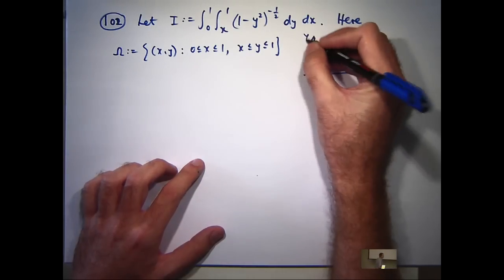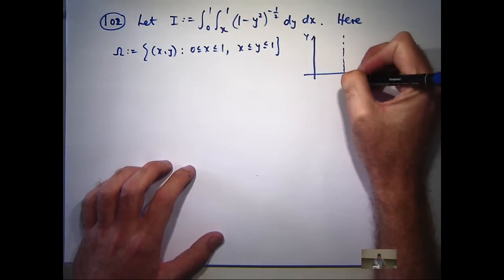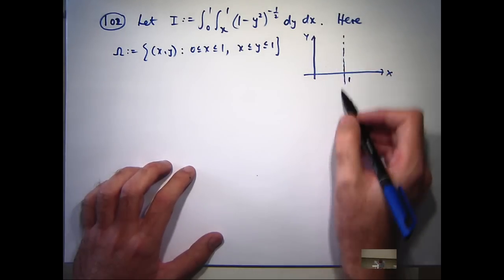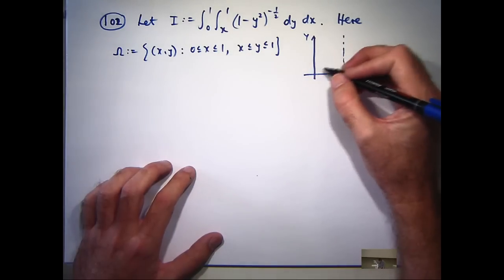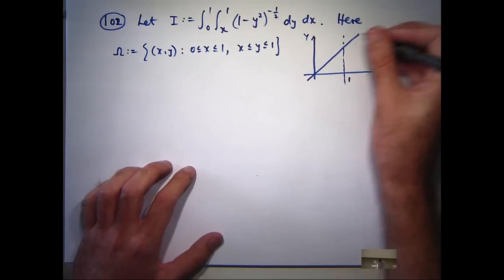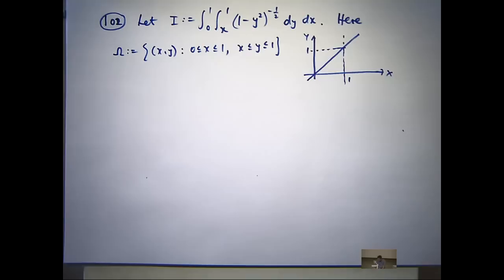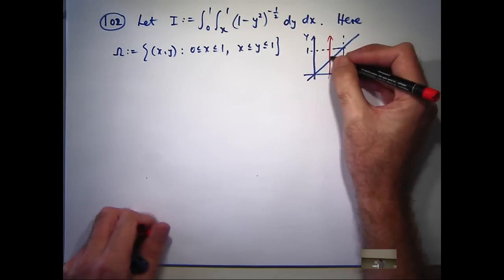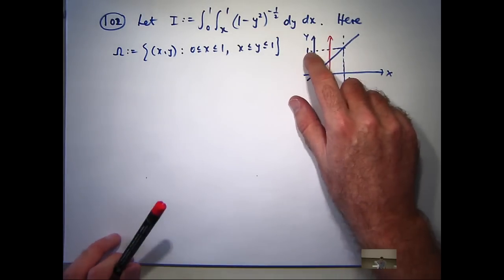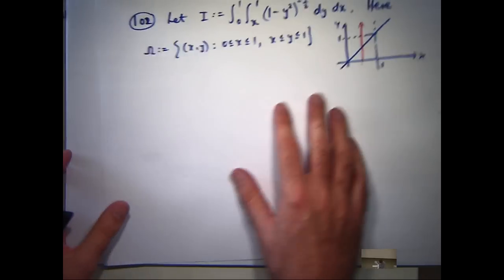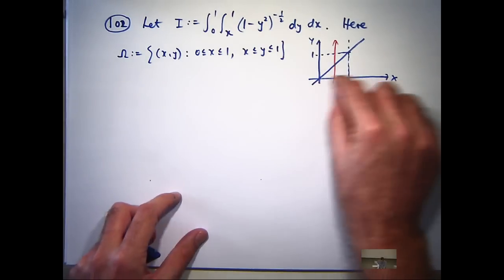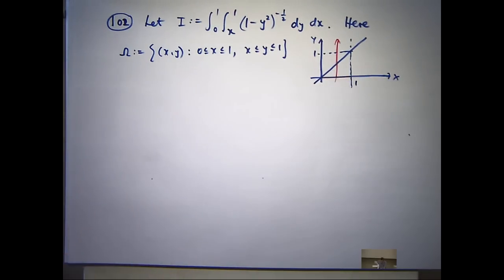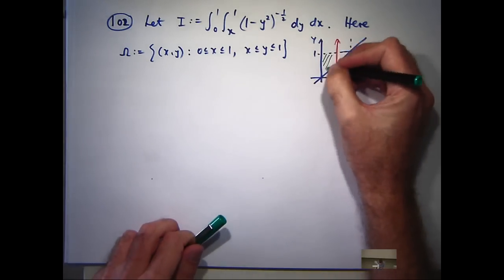So let's draw in the lines: x equals 0, x equals 1, y equals x, and y equals 1. Now, which triangle is it — the top triangle or the bottom triangle? It's the top one. If I draw my vertical line, it has to enter at y equals x and leave at y equals 1. So our region is the top triangle.